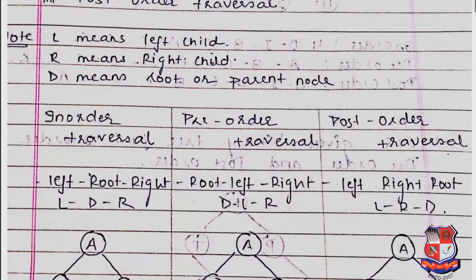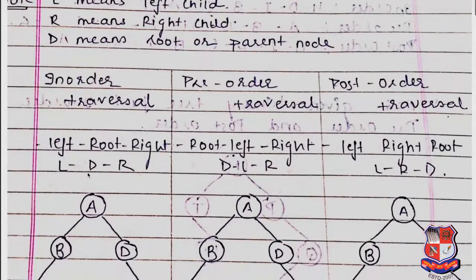For in-order traversal, the rule is: we traverse the left child first, then the root, then the right child. The rule for in-order is LDR.